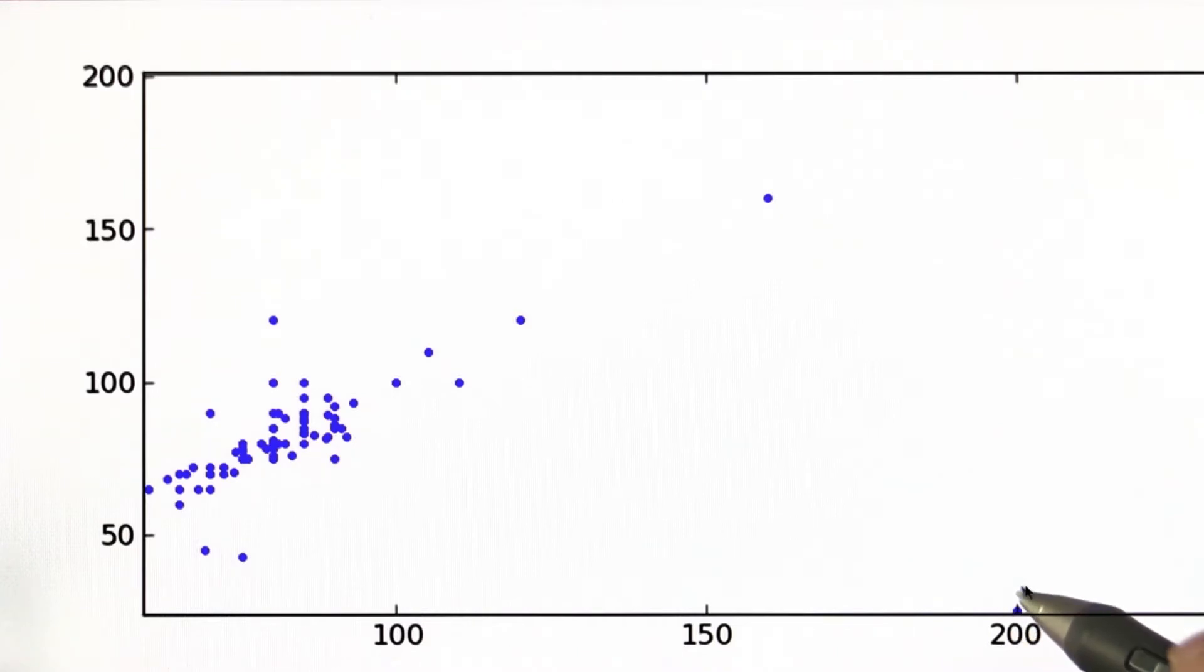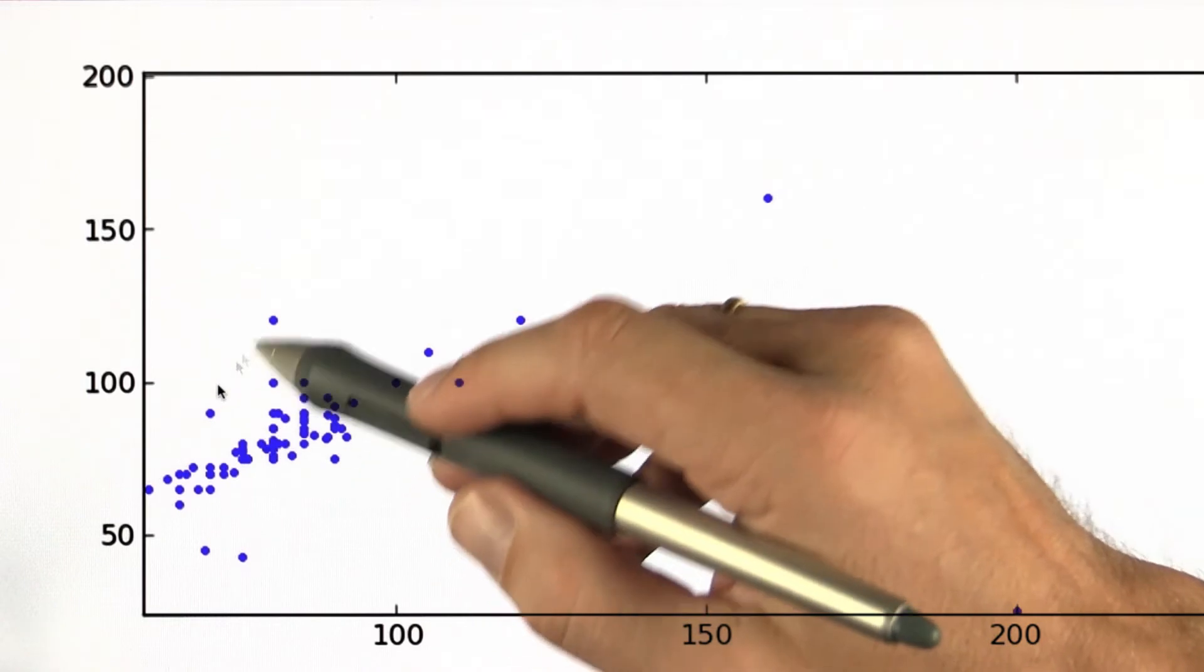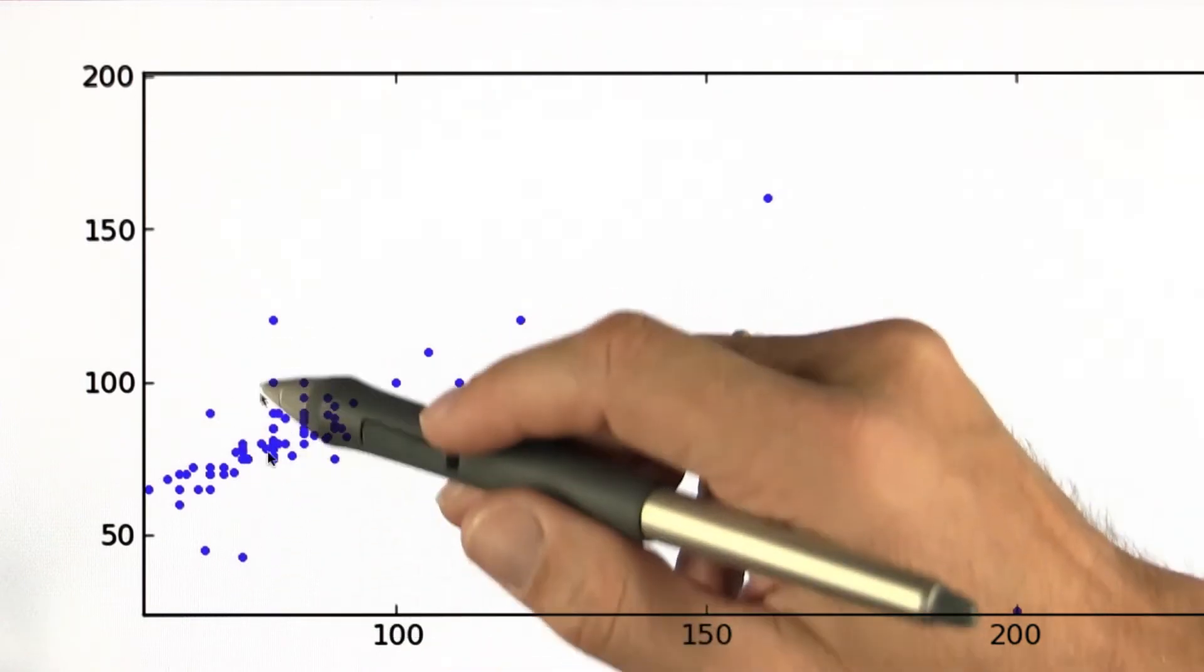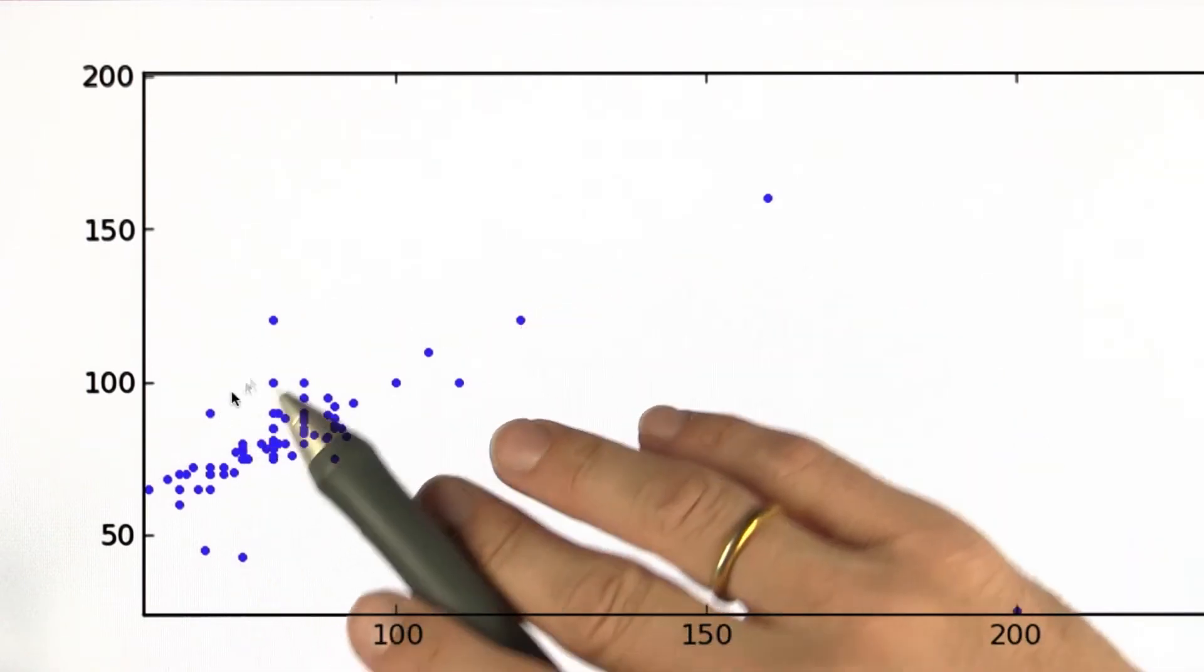There's a point over here. Obviously, someone thought I went from 0 to 200 within a year. And there's also points over here that indicate massive weight loss or massive weight gain within the span of a year.